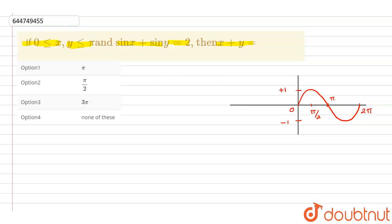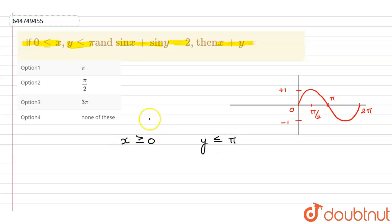Now, in the question we are given that the value of x is greater than or equal to 0 and the value of y is less than or equal to π. And we are given that the value of sin x plus sin y is equal to 2.